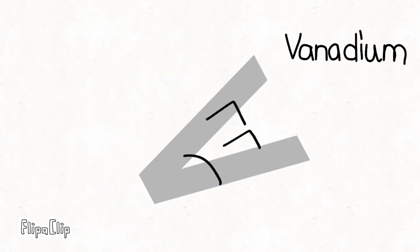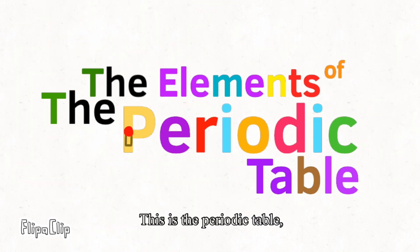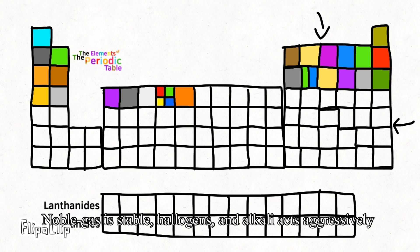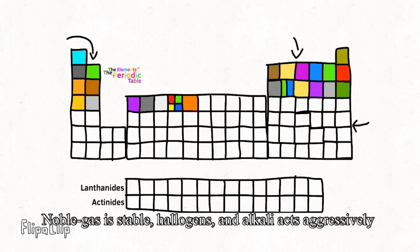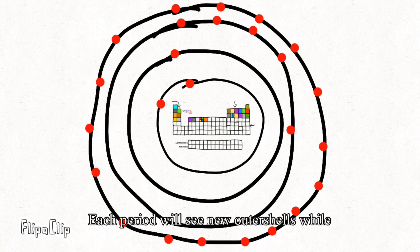Scandium, Titanium, Vanadium and Chromium and Manganese. This is the Periodic Table, Noble Gas is stable. Halogens and Alkali react aggressively. Each period will see new outer shells while electrons are added moving to the right.